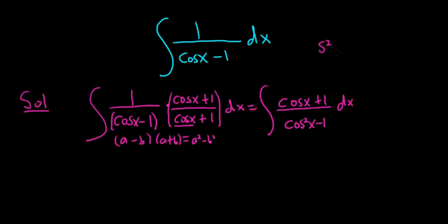Now sine squared plus cosine squared is equal to 1. So we have to figure out what cosine squared minus 1 is. So if we solve for sine squared, we get 1 minus cosine squared. But we need it to be cosine squared minus 1. So if we multiply by negative 1, we get negative sine squared equals, let's see, flip the signs, so it'll be cosine squared minus 1.